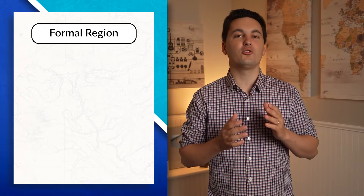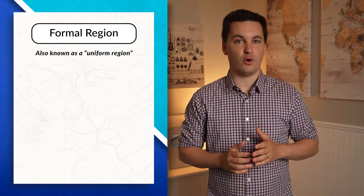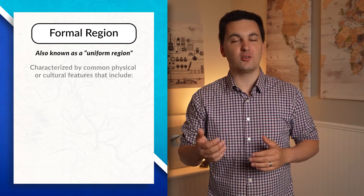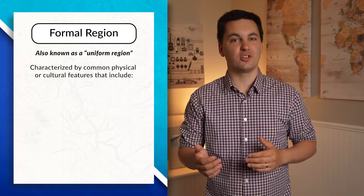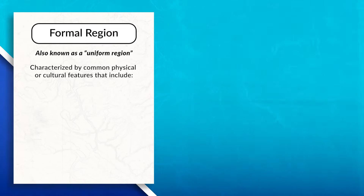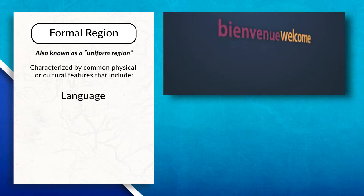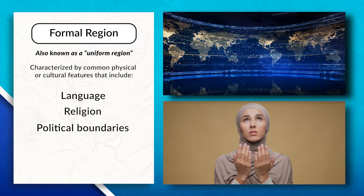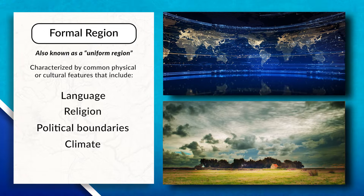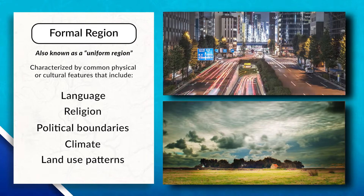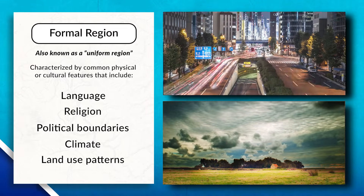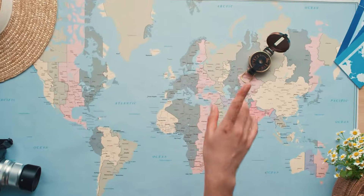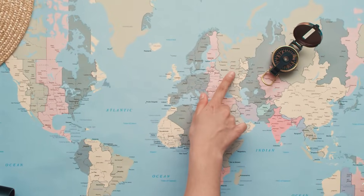A formal region, also known as a uniform region, is an area characterized by common physical or cultural features. These features can include language, religion, political boundaries, climate, or land use patterns. Formal regions have clearly defined boundaries and can be identified and mapped.